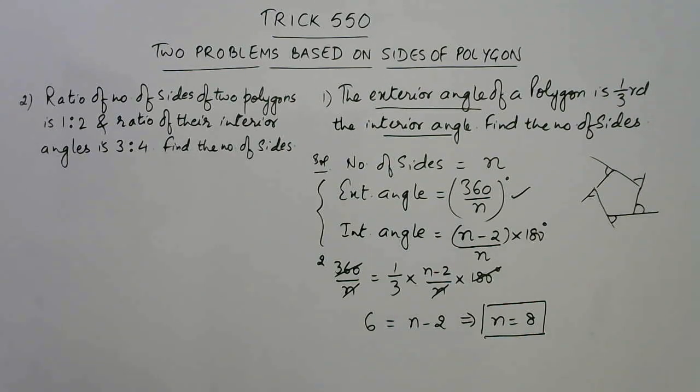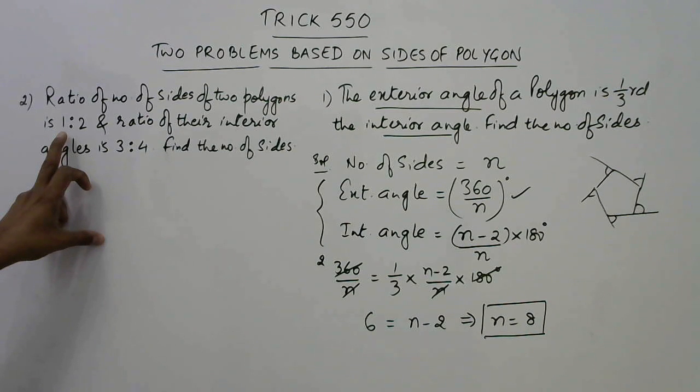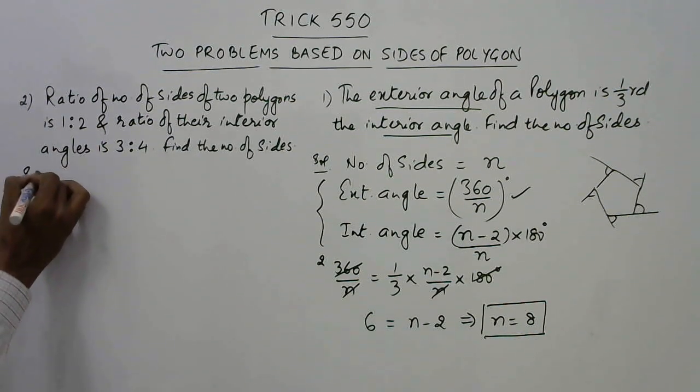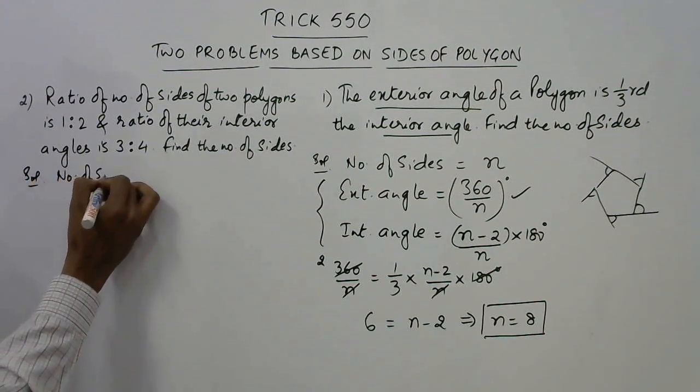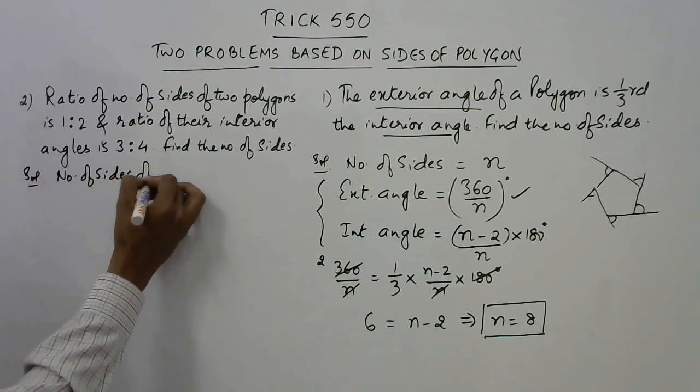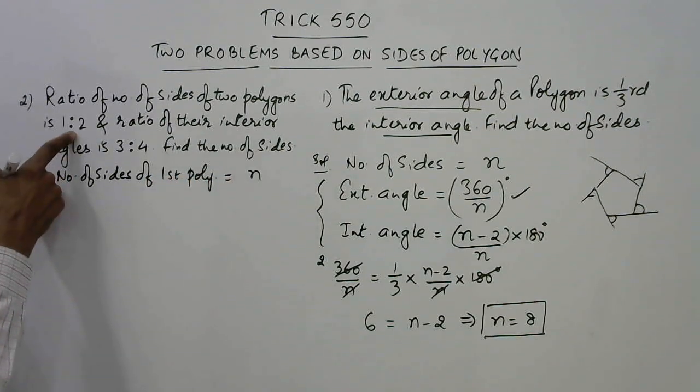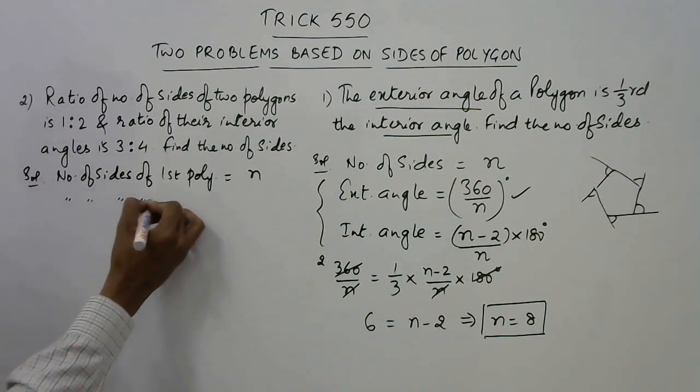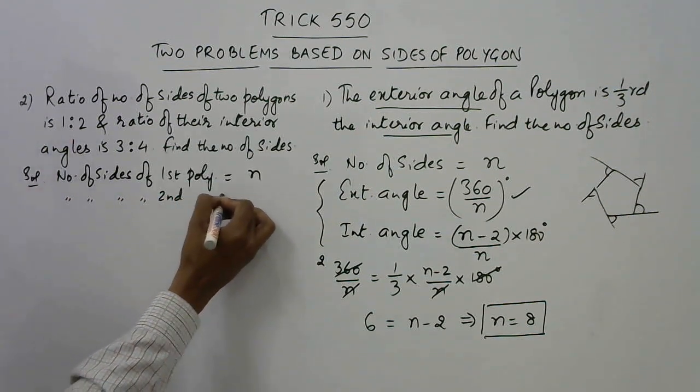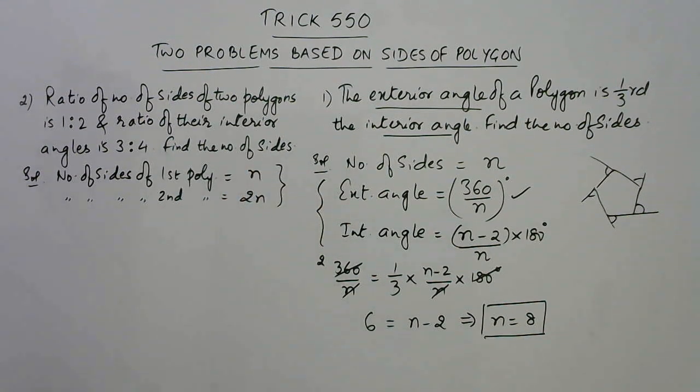Similarly, we have one more question here in which the ratio of the number of sides of two polygons is given. Ratio of the number of sides. So if you assume that the number of sides of the first polygon is actually n, then since the ratio is 1:2, therefore the number of sides of the second polygon will be double of n, therefore the ratio will be 1:2.